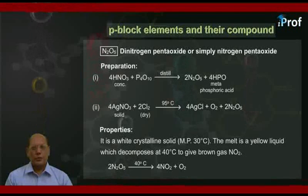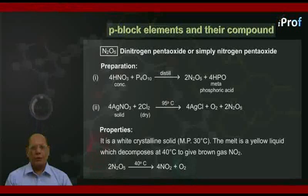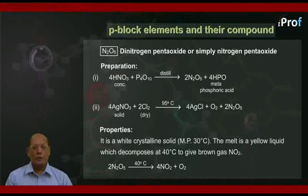Properties: It is a white crystalline solid. Melting point is 30 degrees Celsius. The melt is a yellow liquid which decomposes at 40 degrees Celsius to give brown gas NO2. So we can write 2N2O5 heating at 40 degrees Celsius gives 4NO2 plus O2.